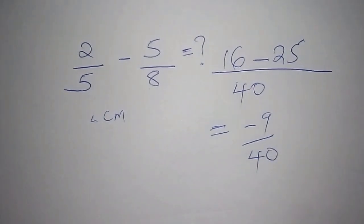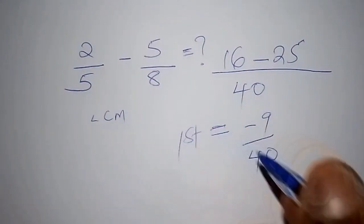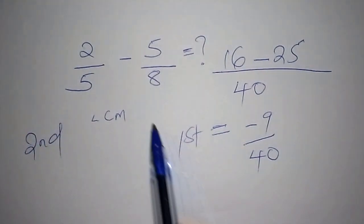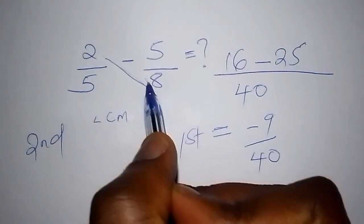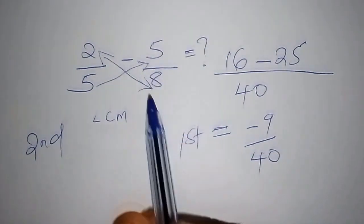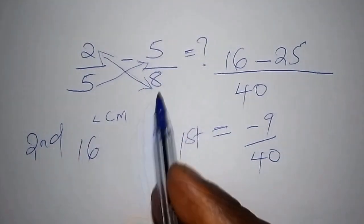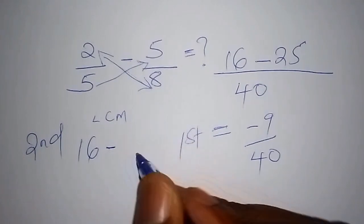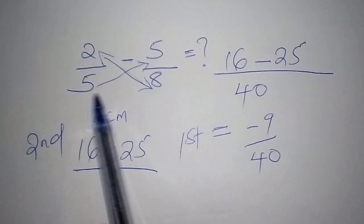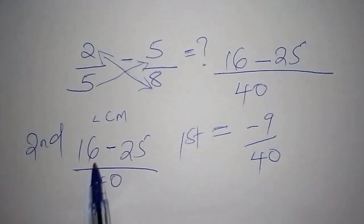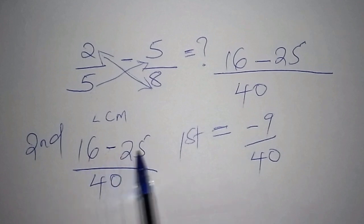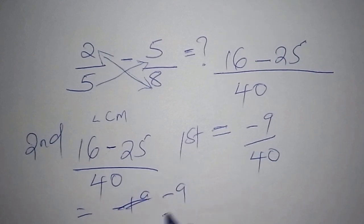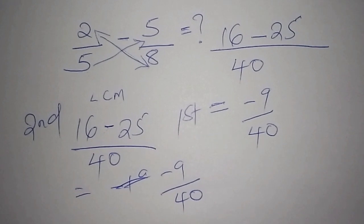Alternatively, here is the second method. You simply cross-multiply: this multiplied by this, and also this multiplied by this. So 8 multiplied by 2 gives 16, then minus 5 multiplied by 5 gives 25, all divided by 5 times 8, which is 40. So we still reach the same answer: 16 minus 25 gives us negative 9 over 40.